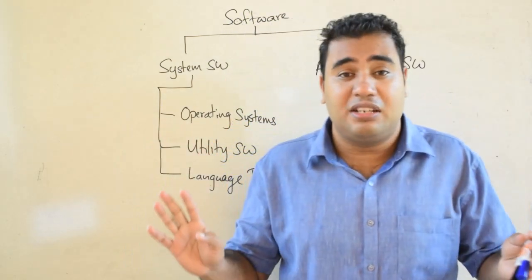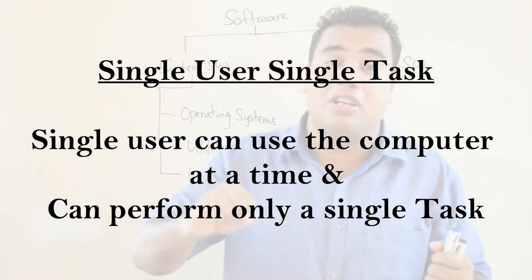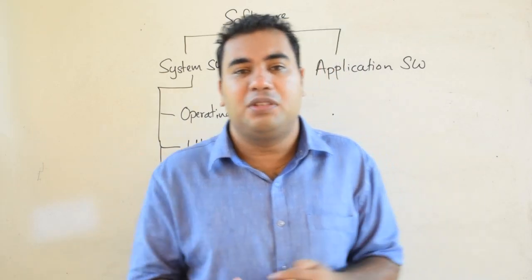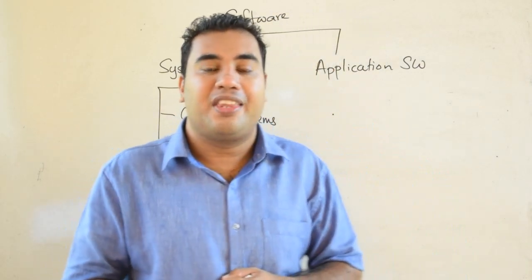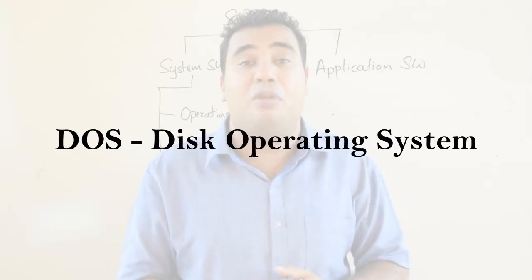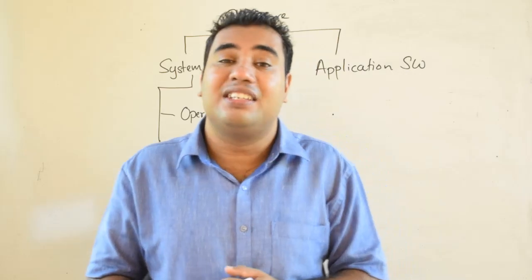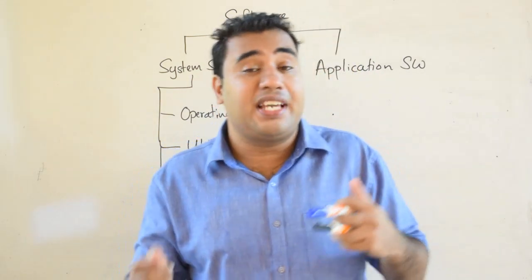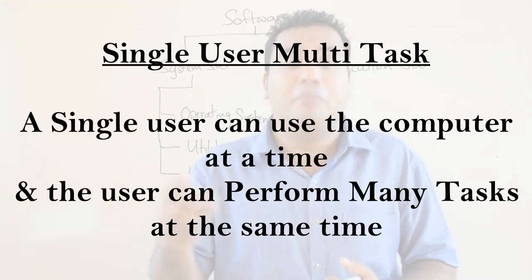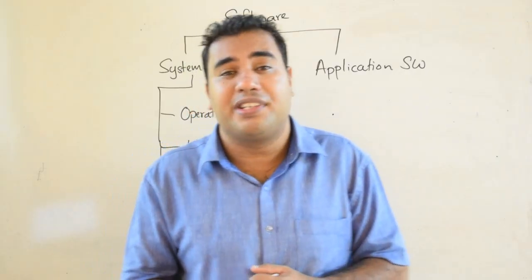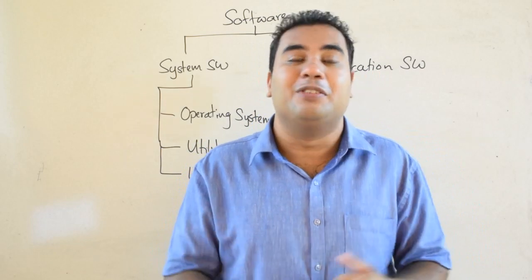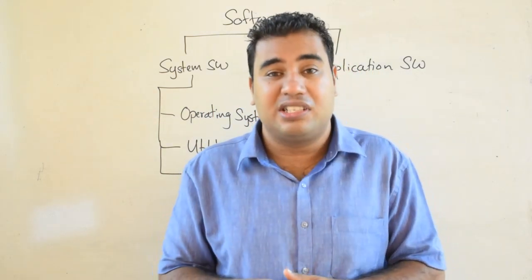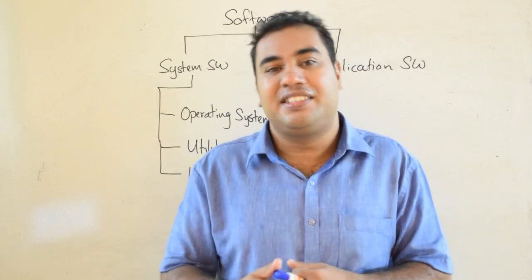A single-user single-task operating system means it can only be used by one user, and only one task can be performed at a time. An example is the DOS operating system. A single-user multi-task operating system can only be used by one user but allows many tasks at the same time. Examples include Windows XP, Windows 8, Windows 10, Mac OS, iOS, and Android. For instance, you can type a document while listening to music — that is multi-tasking.